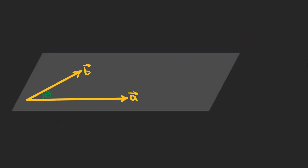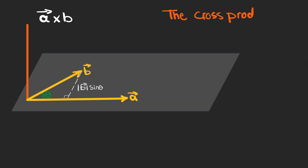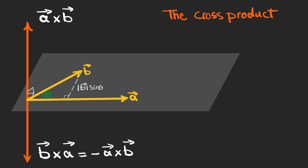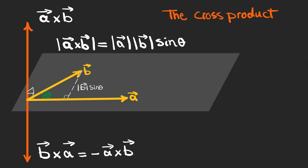Now suppose we have a plane with two vectors a and b and the angle between them is theta. If we draw the same line on this plane we have another right triangle, and this side again is the magnitude of b times sine theta. The cross product of a and b is a vector perpendicular to this plane, and it is perpendicular to both a and b. It's very important to know that b cross a is minus a cross b — it is in the opposite direction but still perpendicular to a and b. The magnitude of the cross product is |a| times |b| times sine theta.